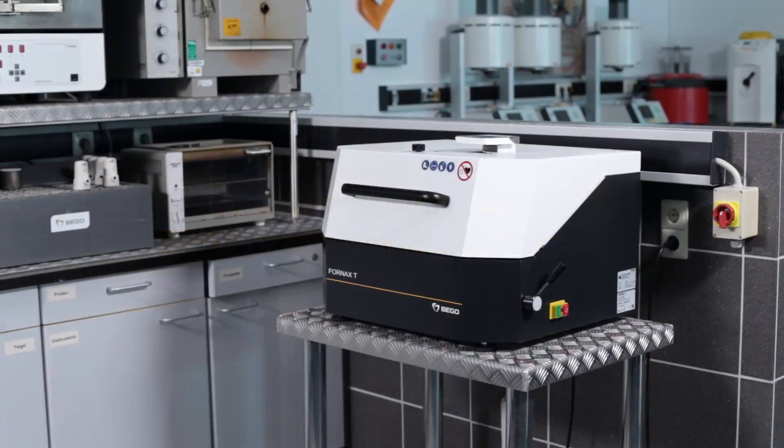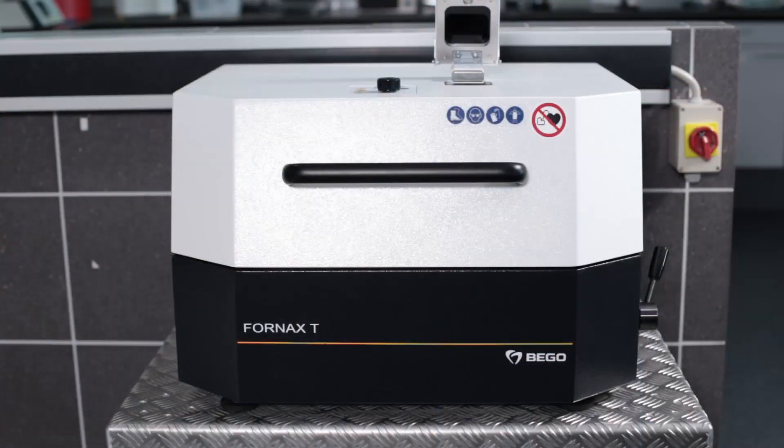The Fornax T is a casting machine that has been produced by Bego for more than 50 years and is now in its sixth generation.